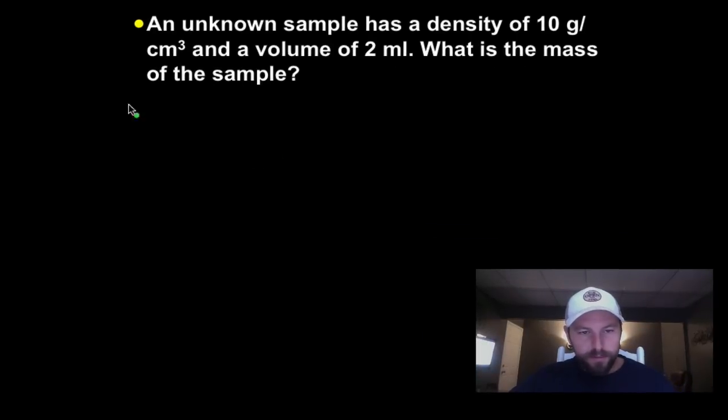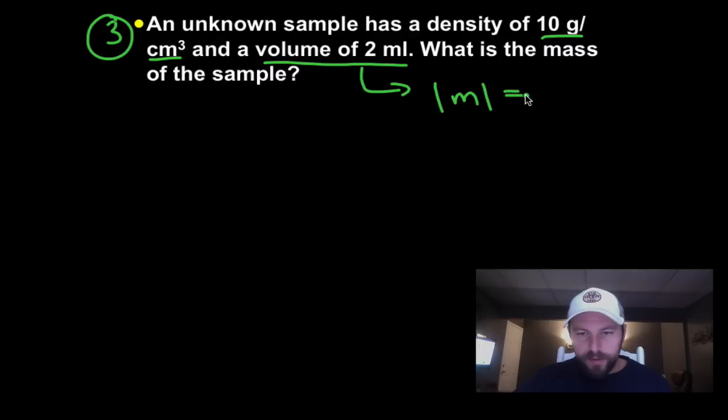Okay, let's work on the third one. Okay, an unknown sample has a density of 10 grams per centimeter cubed and a volume of 2 milliliters. What is the mass of that sample? Just a quick thing, volume of 2 milliliters, 1 milliliter is the same as 1 centimeter cubed.